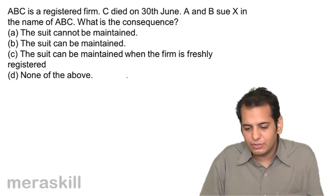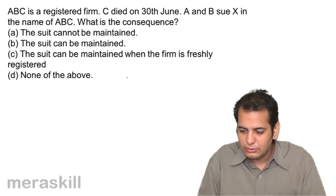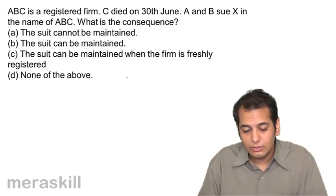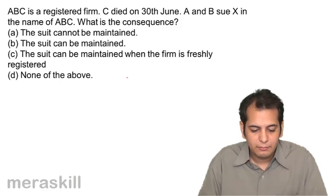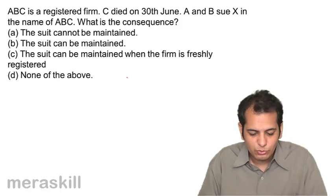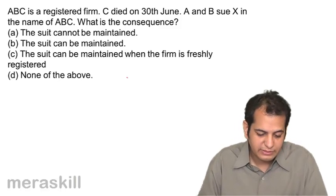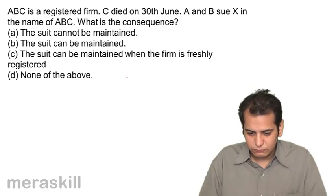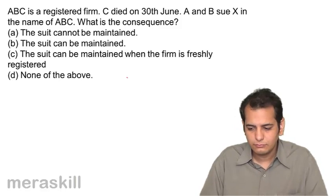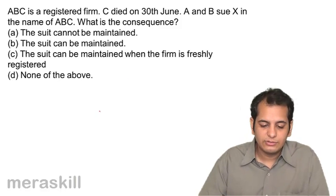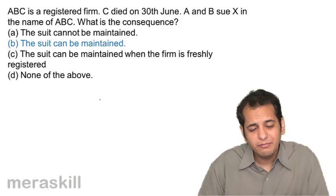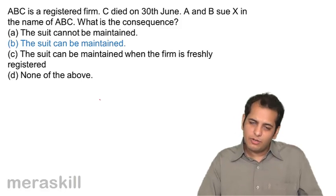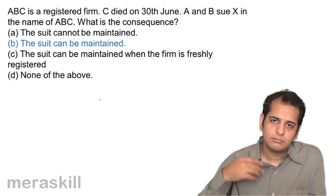A, B, C is a registered firm. C died on 30th June. A and B sue X in the name of ABC. The options are: the suit cannot be maintained, the suit can be maintained, or the suit can be maintained when the firm is freshly registered. The answer is the suit can be maintained — even though one partner has died, the firm can always file a suit against an outsider to recover an amount.